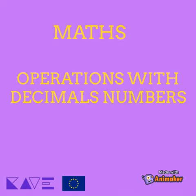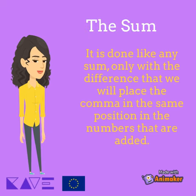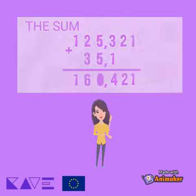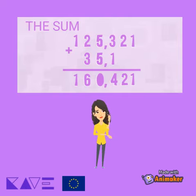Maths. Operations with decimal numbers. The sum. It is done like any sum, only with the difference that we will place the comma in the same position in the numbers that are added. For example, 125.321 plus 35.1 equals 160.421.